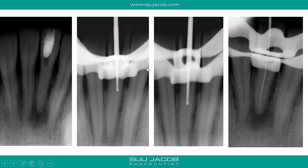We've traditionally used radiographs as a tool to help us locate the calcified canal. The technique is fairly simple — we use a burr and as we drill apically, we take intermittent radiographs to check if the burr is along the long axis of the tooth. If we find that the burr is off-center, we reorient it to make sure it stays along the long axis, and we keep doing this every millimeter until we finally locate the canal.